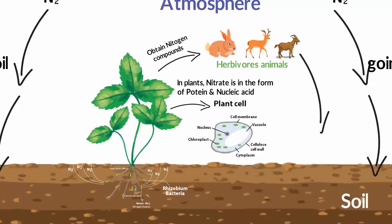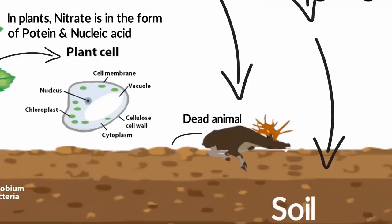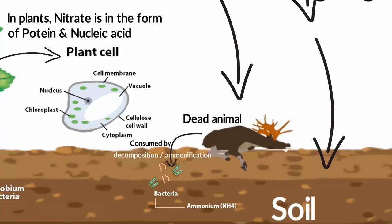When animals produce waste or die, bacteria consume this dead organic matter. As a result, the nitrogen in this waste is in the form of ammonium. This process is called decomposition or ammonification.